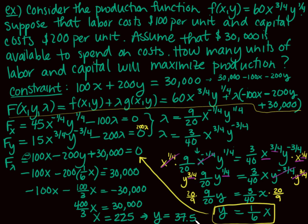That was a lot of work, but it wasn't too bad. The easy part was the calculus — the hard part was the algebra. We can maximize production when we have 225 units of labor and 37.5 units of capital. Please look at the other examples in the book, especially ones that show different ways to solve for x, y, and lambda. As usual, let me know if you have any questions.